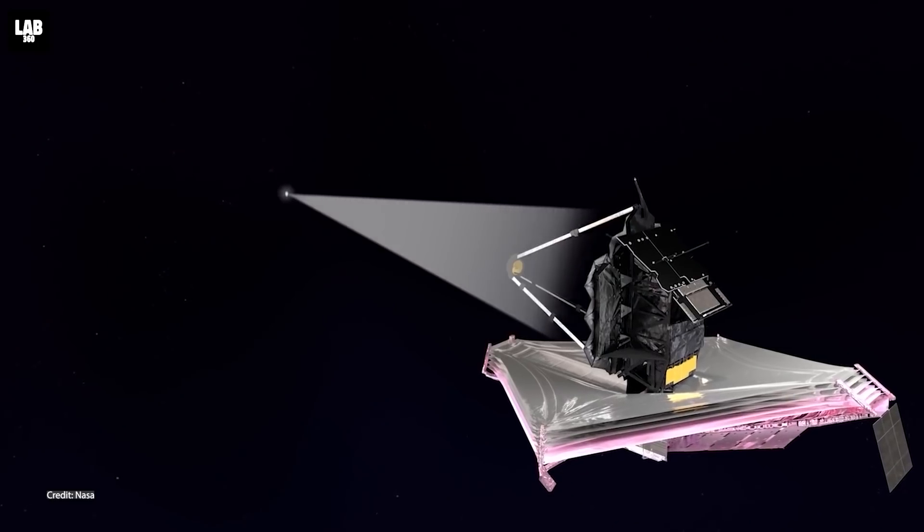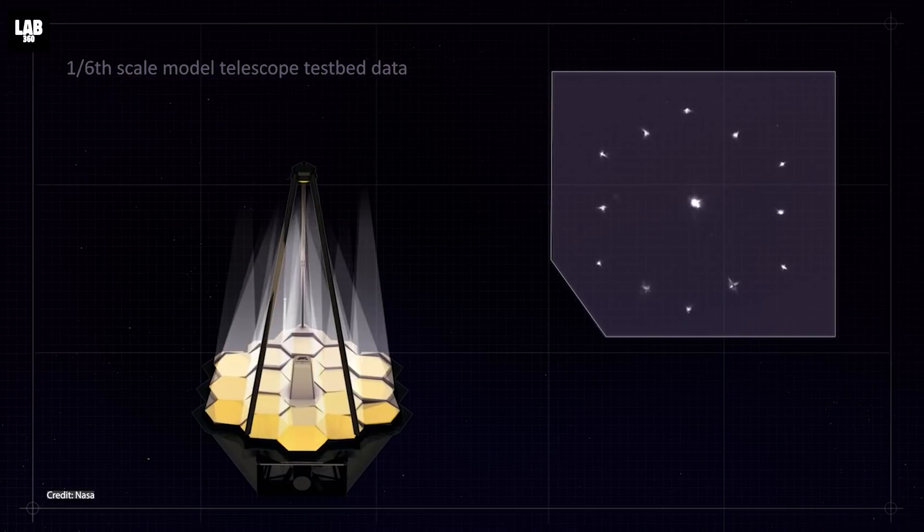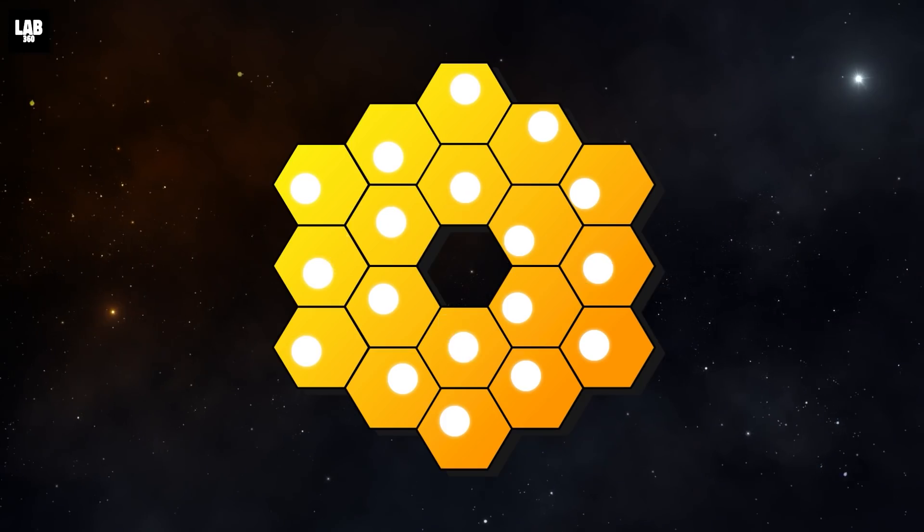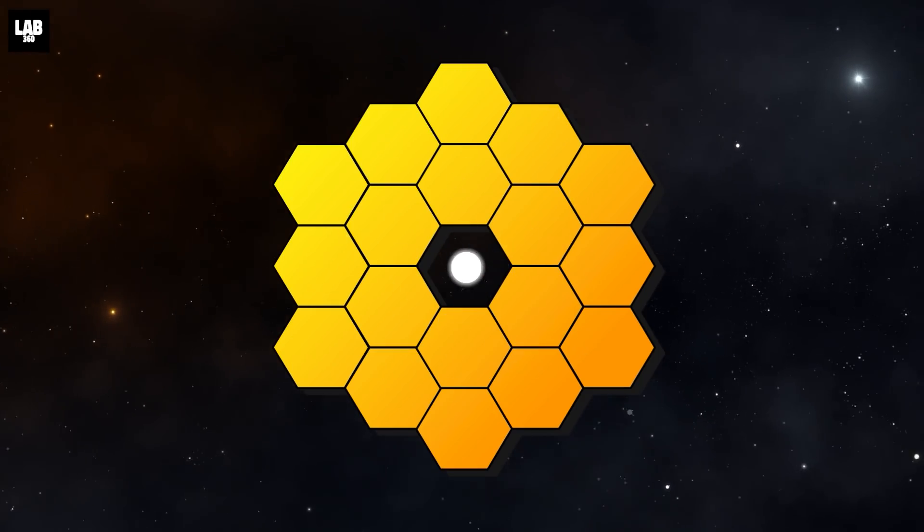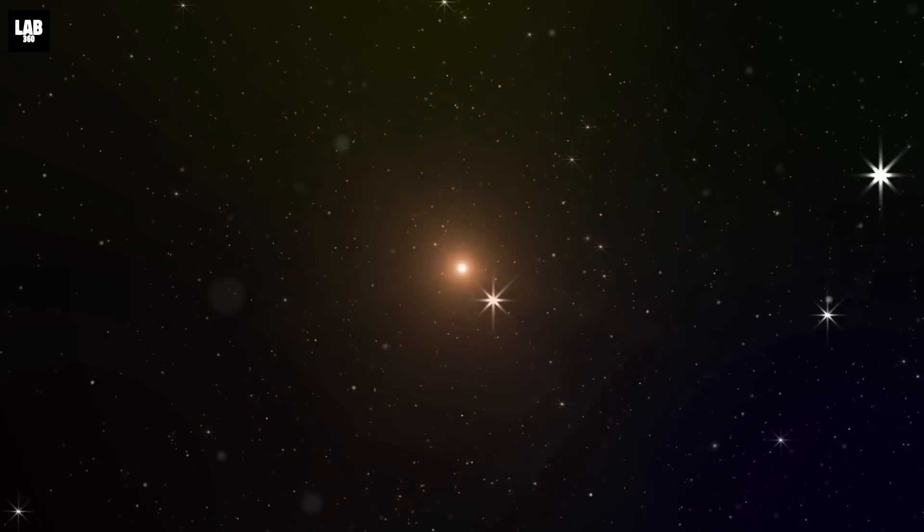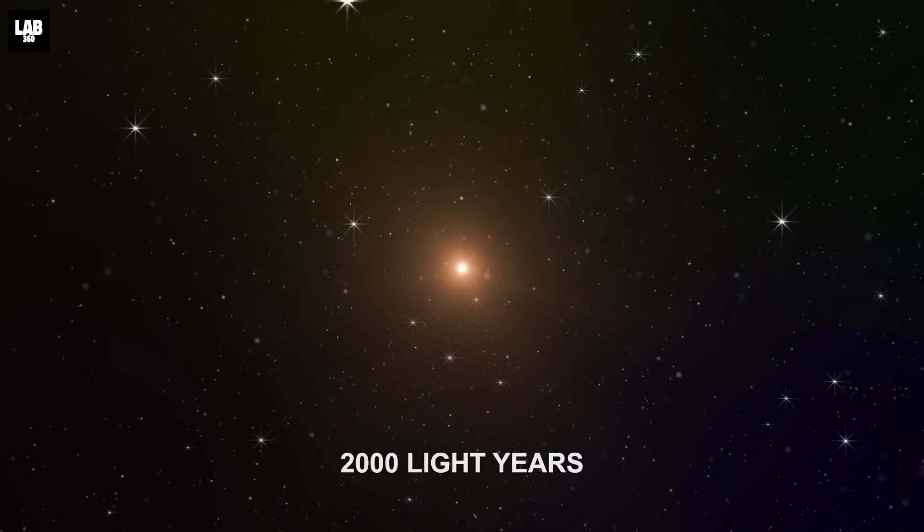About three weeks ago, the JWST took its first image of a bright single star. Right after its mirrors were fully aligned, the Webb telescope captured an image of a star which is located about 2,000 light-years from Earth.